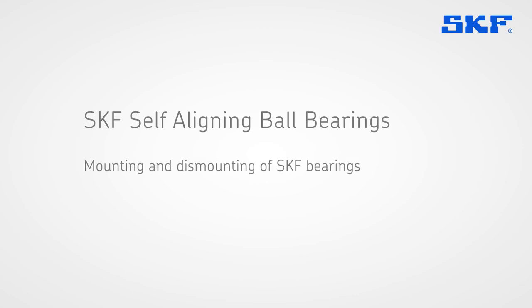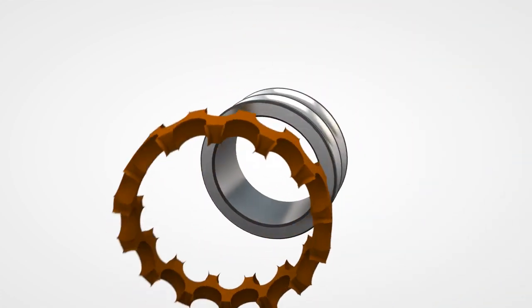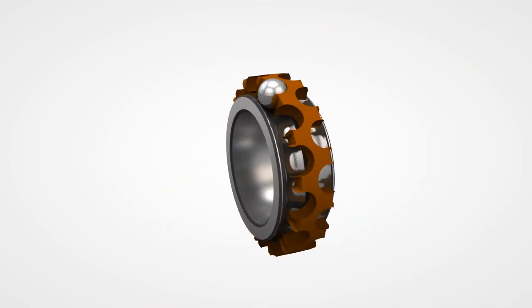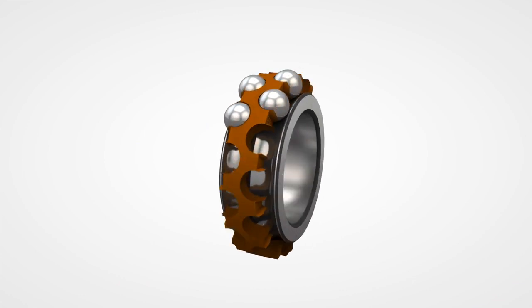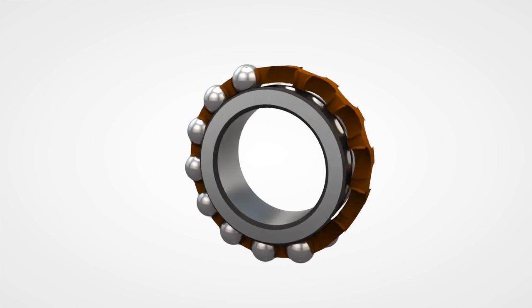This SKF training film is about self-aligning ball bearings. The self-aligning ball bearing consists of two rows of balls, secured and separated on the inner ring by the cage and a sphered outer ring raceway.